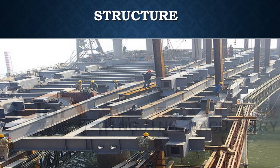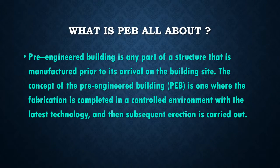This is the photo of construction in which they are using PEB structure. PEB is a building in which any part of a structure is manufactured prior to its arrival on the building site. The concept of PEB is one where the fabrication is completed in a controlled environment and then subsequent erection is carried out.